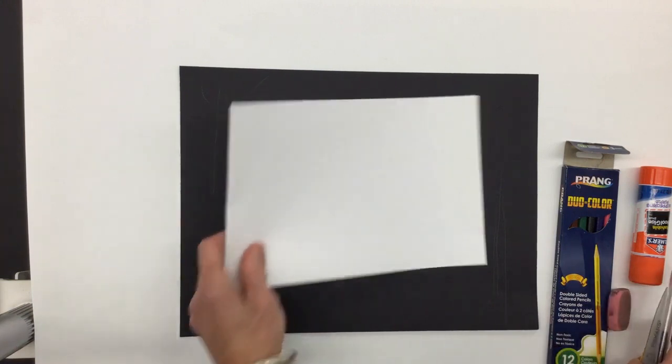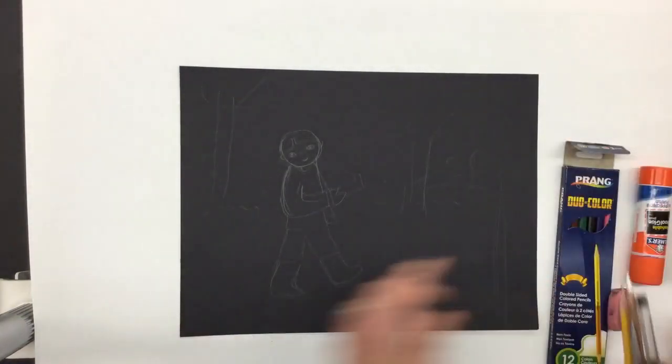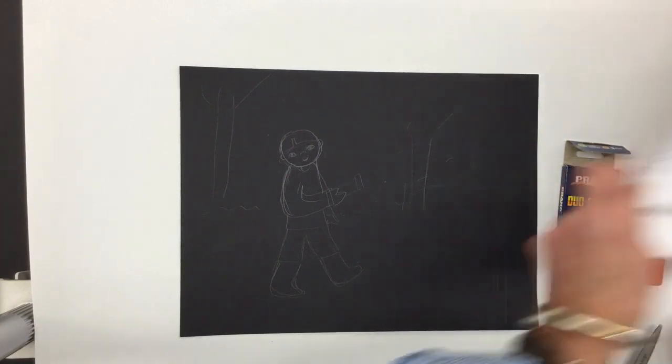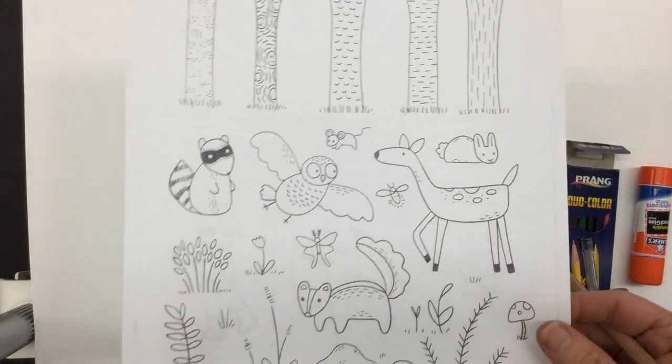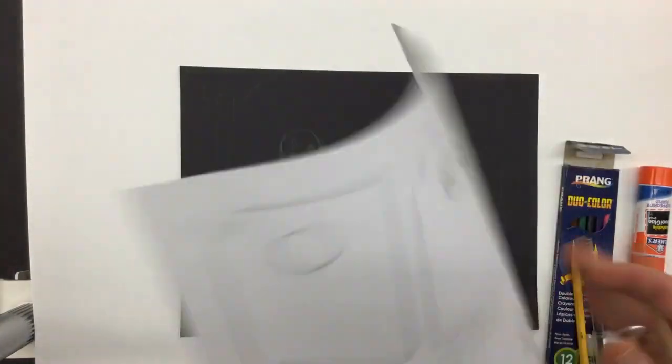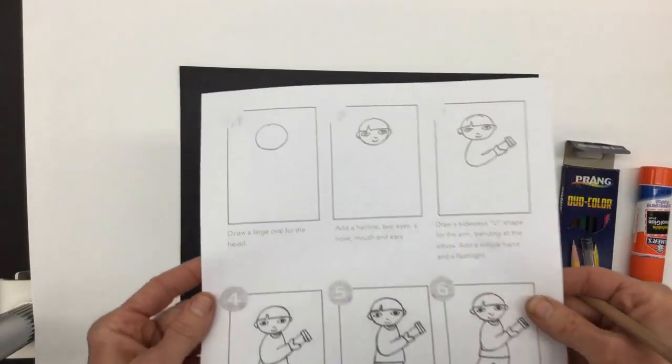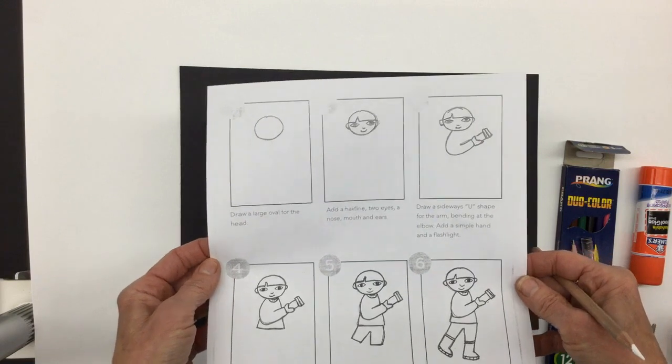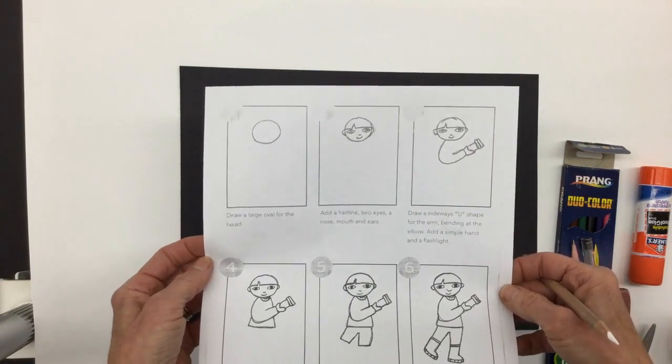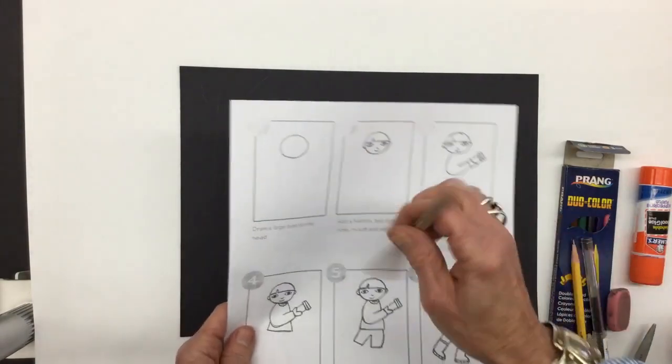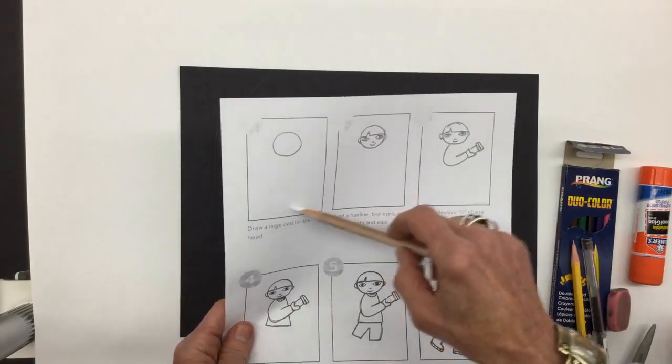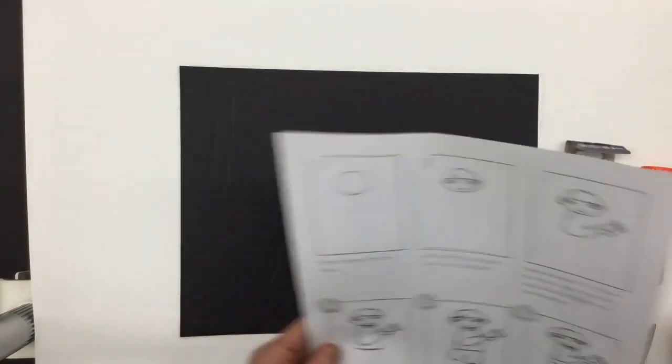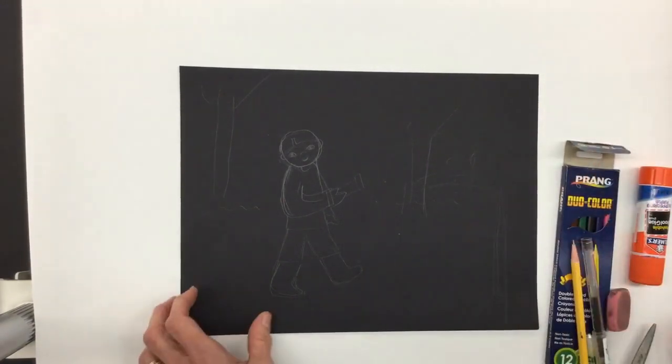So to make this picture, we're going to start with our black piece of paper. And I have also made a handout for you. It shows the woodland creatures the little boy would see in the night. And it shows you a simple step-by-step way of drawing a little boy with his flashlight. You can follow these steps and do it this way, or you can make it your own way. The artist made the little boy out of very simple shapes. And I like that idea. So I think I will do the same thing.